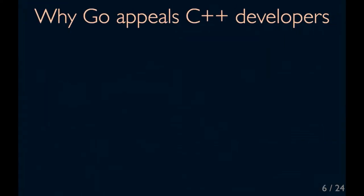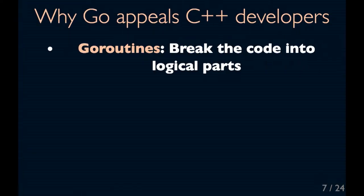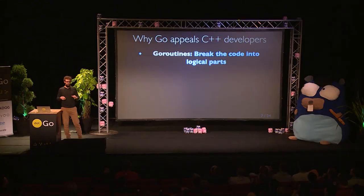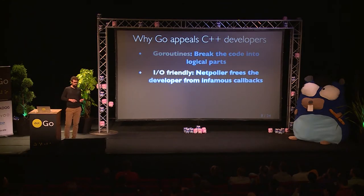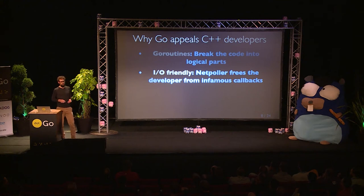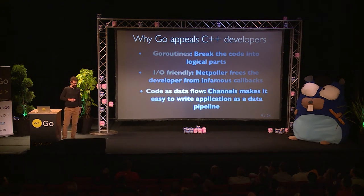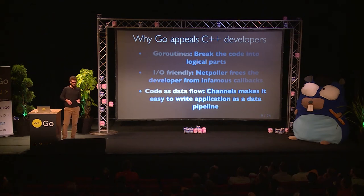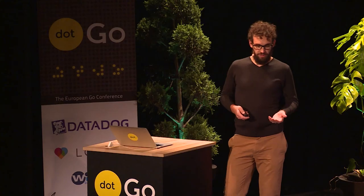So, why is Go so awesome? With GoRoutines, you can break the code into very logical parts. Thanks to the NetPoller, you don't have to bother with callbacks or with event loops anymore. And you can write your application as a pipeline. With channels, it's really easy to write data flow.